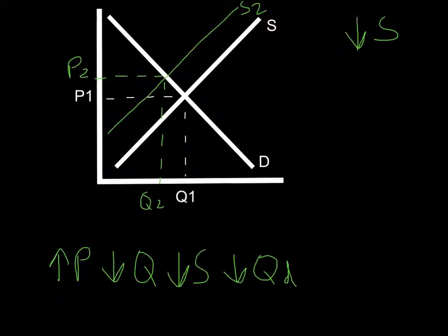So that's what happens when one curve shifts. Those are the four possible graphs and the only four possible things that can happen. On the next podcast we'll take a look at what happens when both curves shift. We'll see you on the next podcast. This has been Mr. Hagen.